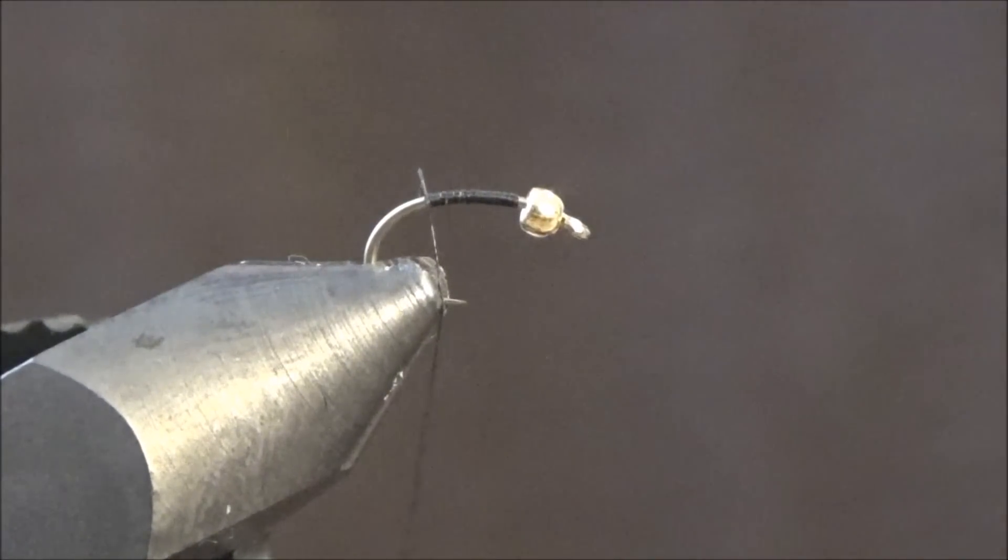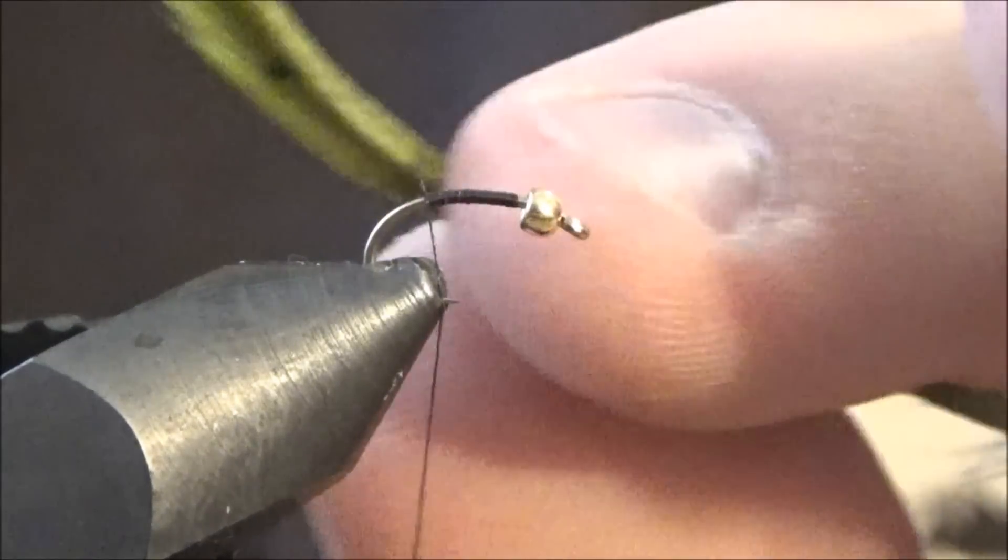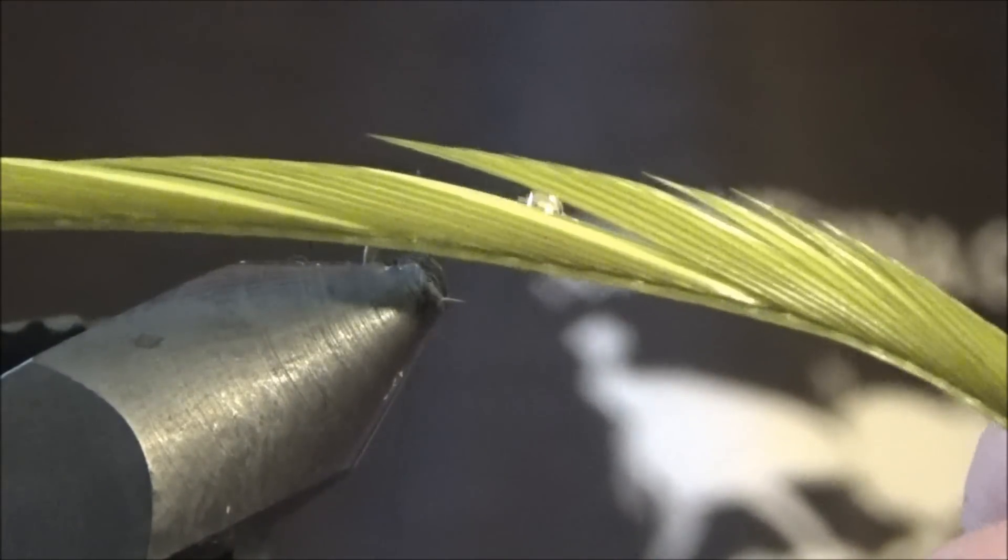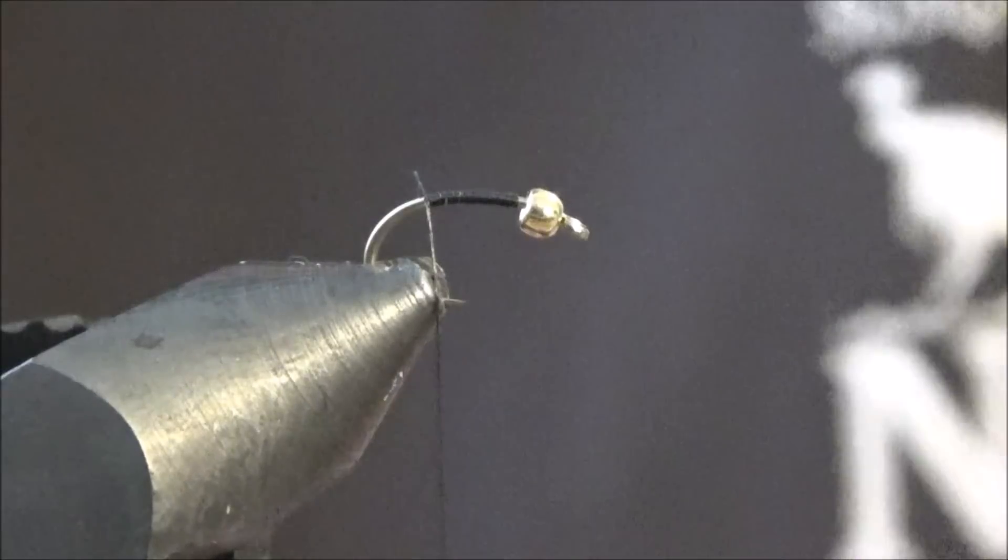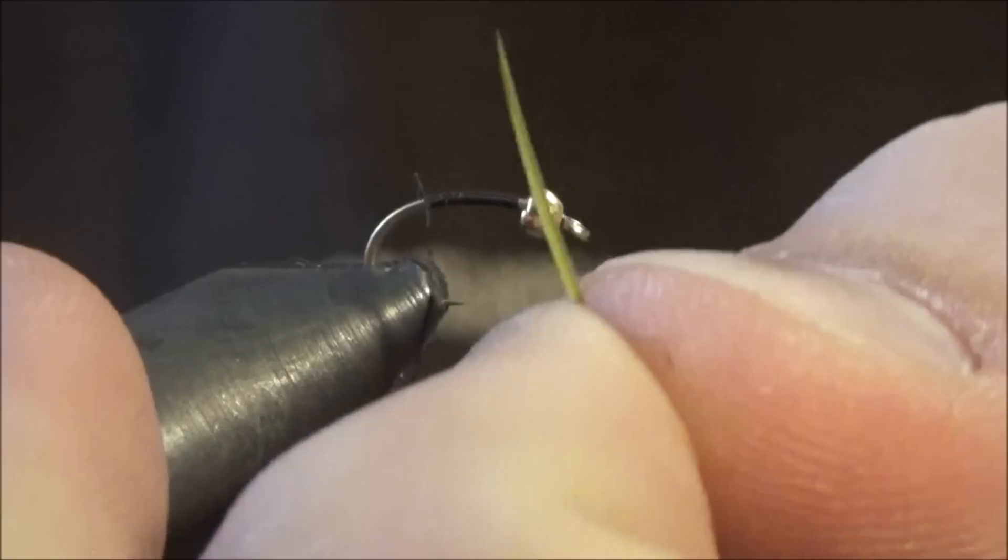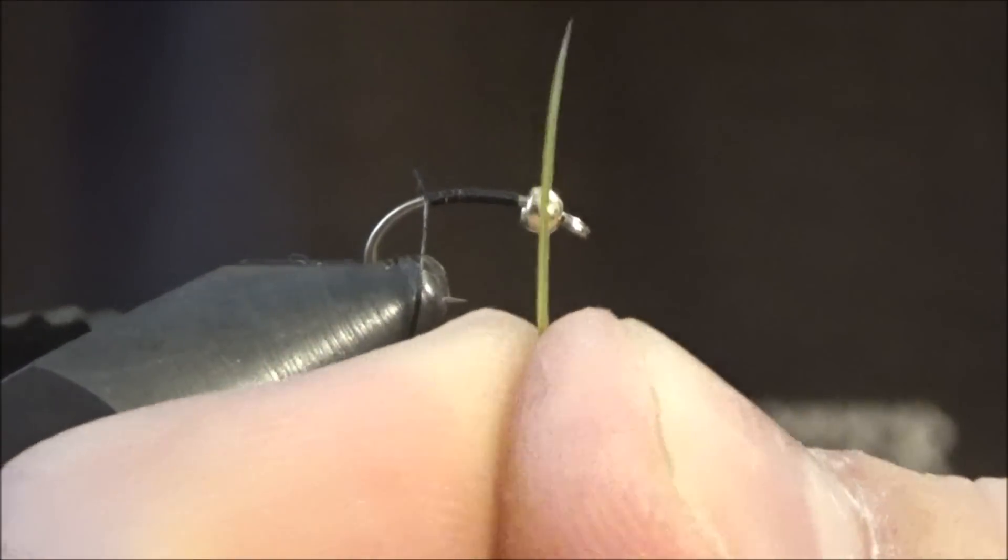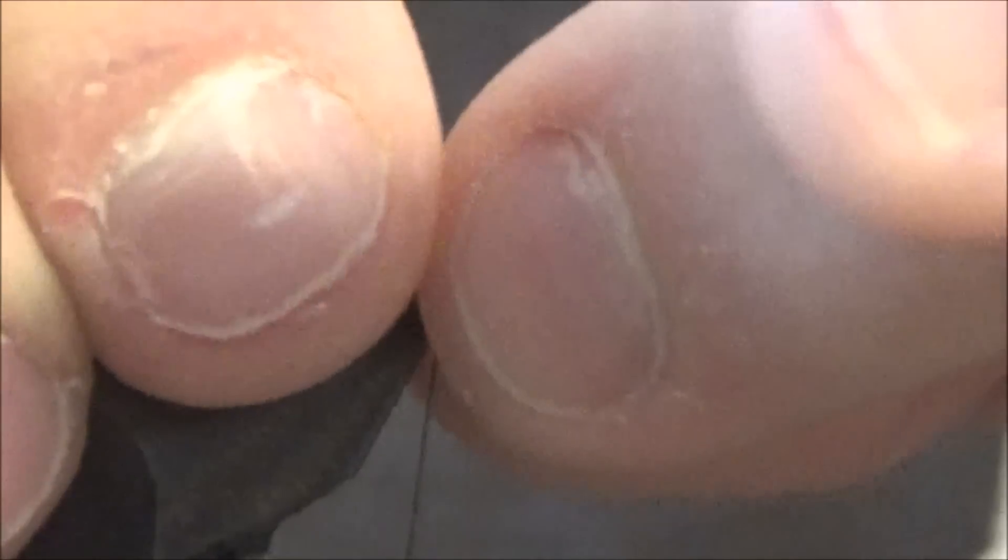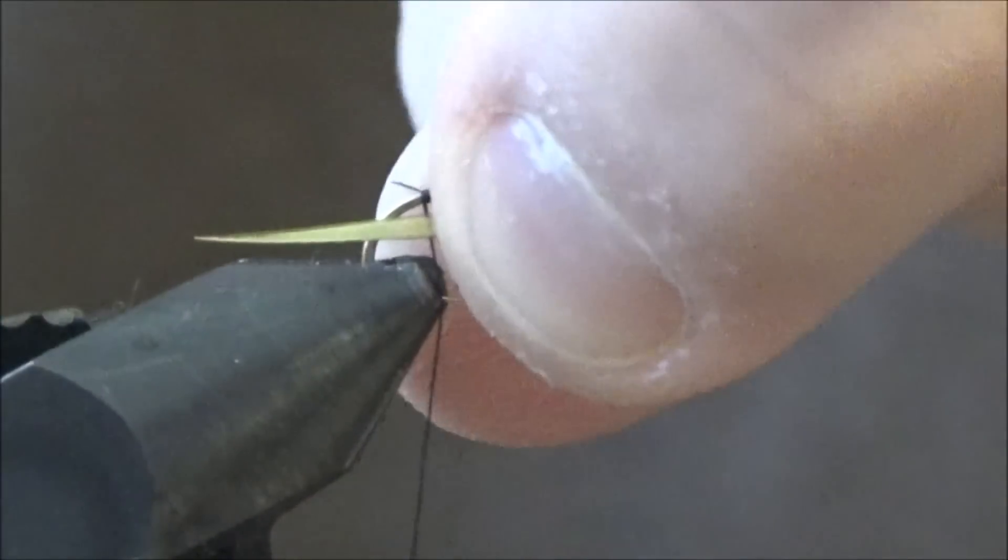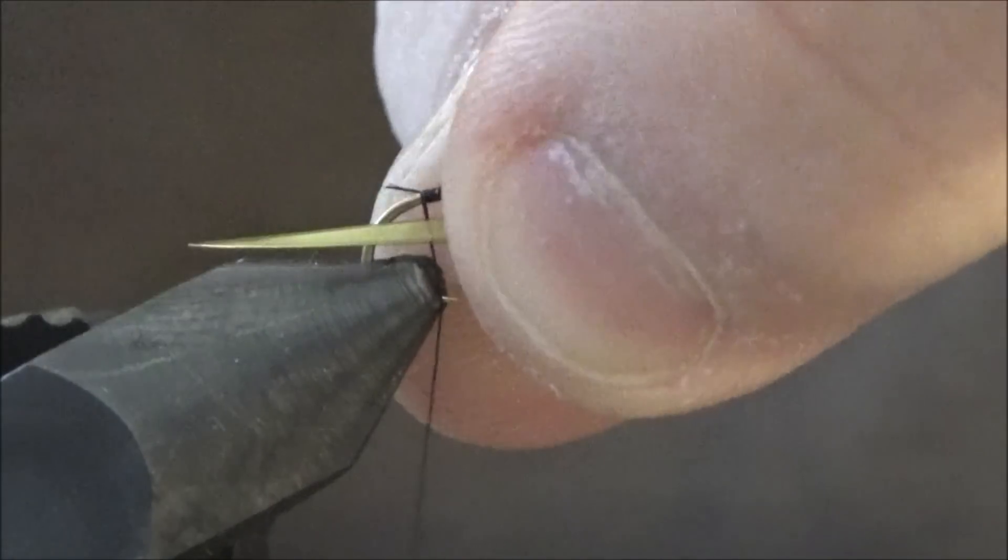Next you're going to take some olive goose biots. You can use turkey or goose. You're going to cut two of them off, two side-by-side biots off. You're going to take one, and you can see the natural curve to the biot. You're going to use that, and you want it to tail away from the hook so this goes that way.